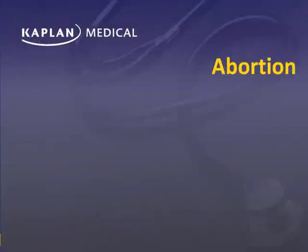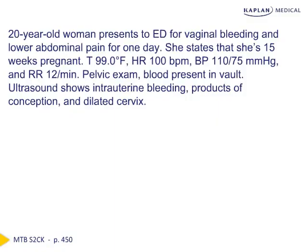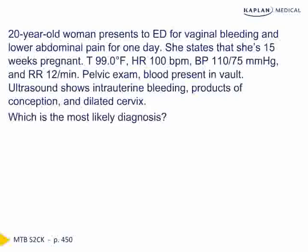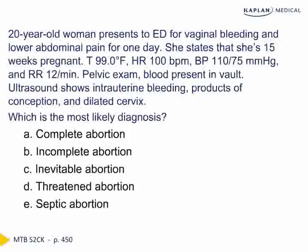We're going to continue in the early pregnancy complications section by discussing the manifestations, diagnosis, and management of abortion. A woman who says she's 15 weeks pregnant presents to the emergency department with bleeding and abdominal pain. Her vital signs are stable, and on pelvic exam we see blood in the vault. Ultrasound shows intrauterine bleeding, products of conception, and a dilated cervix. We're asked what the most likely diagnosis is, given all the different subclassifications of abortion.